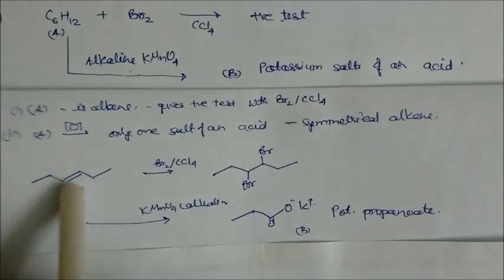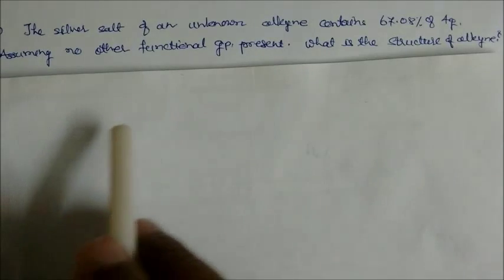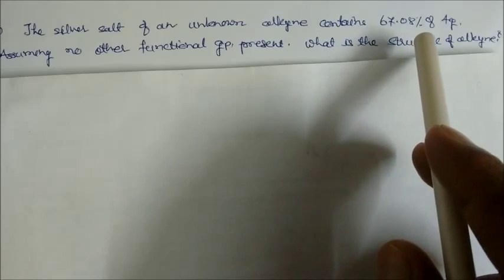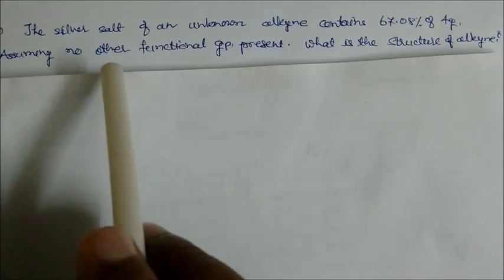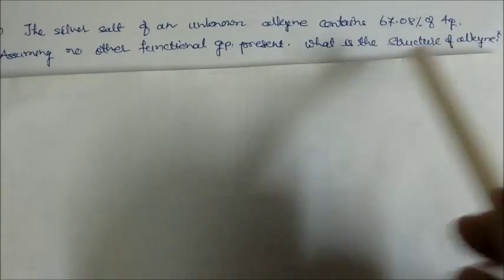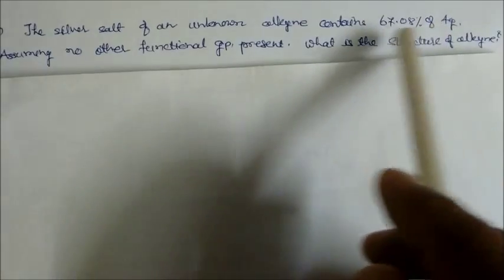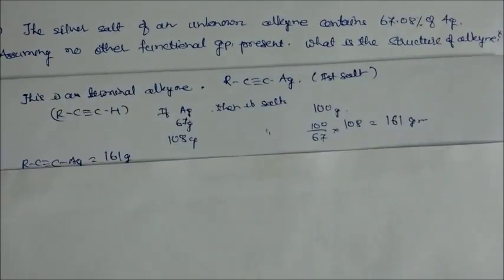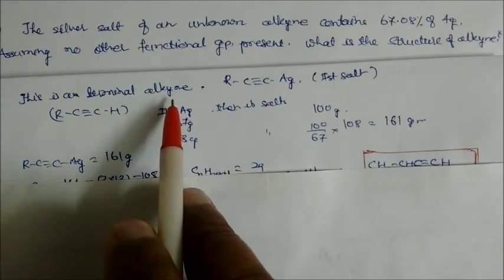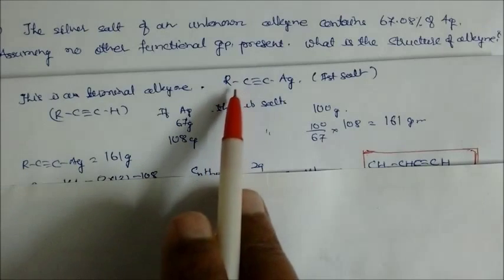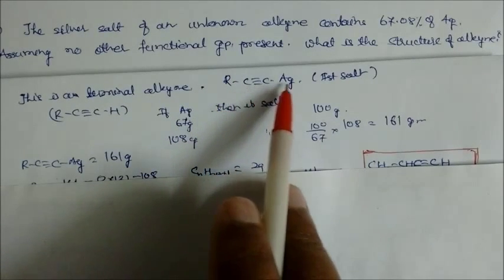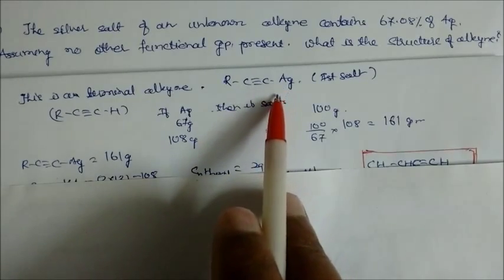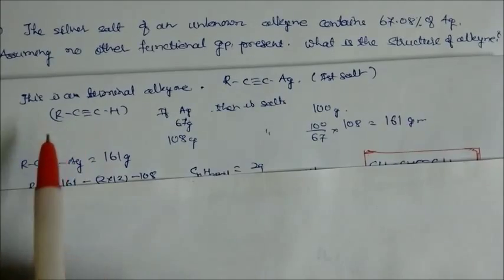The silver salt of an unknown alkyne contains 67.08% silver. Assuming no other functional group is present, we need to find the structure of the alkyne. In 100 grams of this silver salt we get 67.08 grams of silver. This is a terminal alkyne because it reacts with silver. We can write the terminal alkyne silver salt as R-C≡C-Ag, where the terminal hydrogen is replaced by silver.